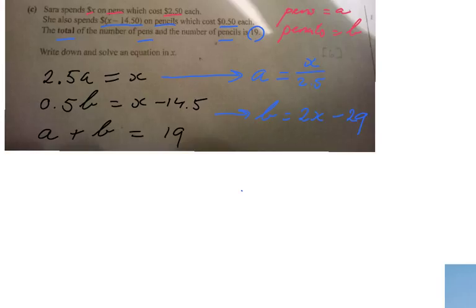And here I say A plus B equals 19. So if I now substitute that in this equation, A is X over 2.5 plus B, which is 2X minus 29. Well, that should equal 19, and that is your equation in X. I have one equation with the variable being X, and now I have to solve it.